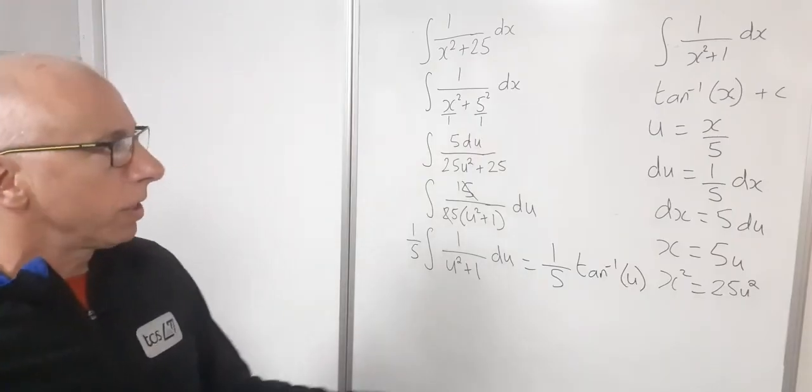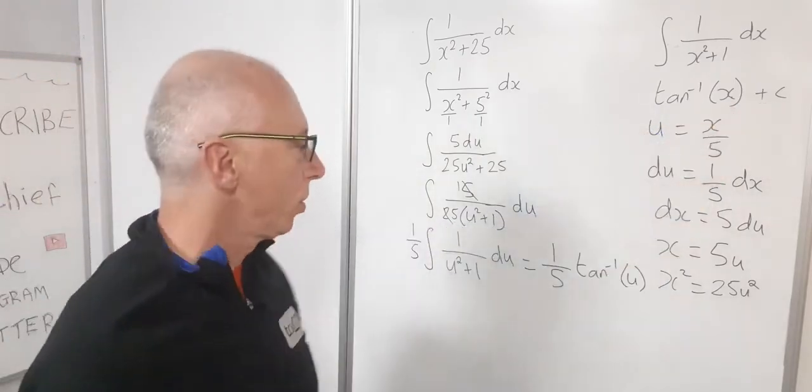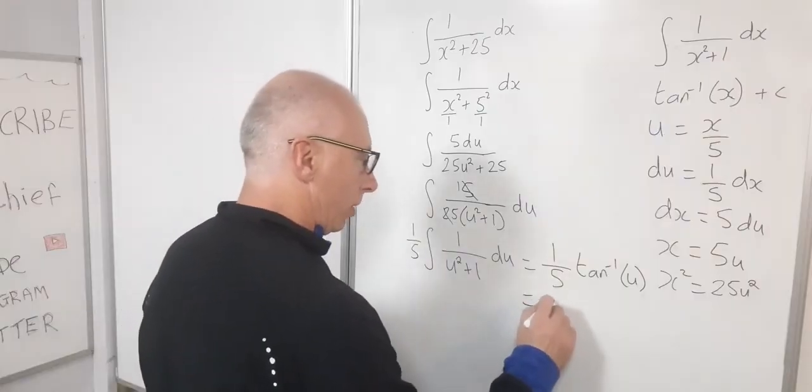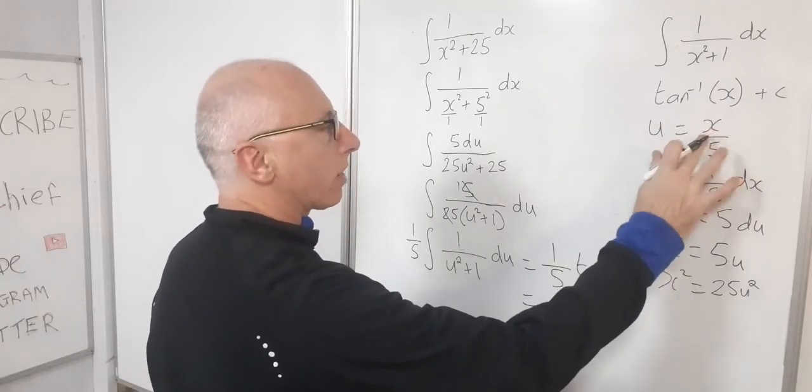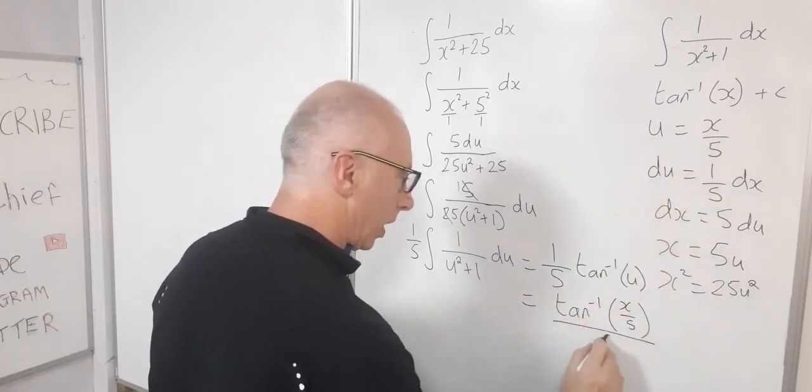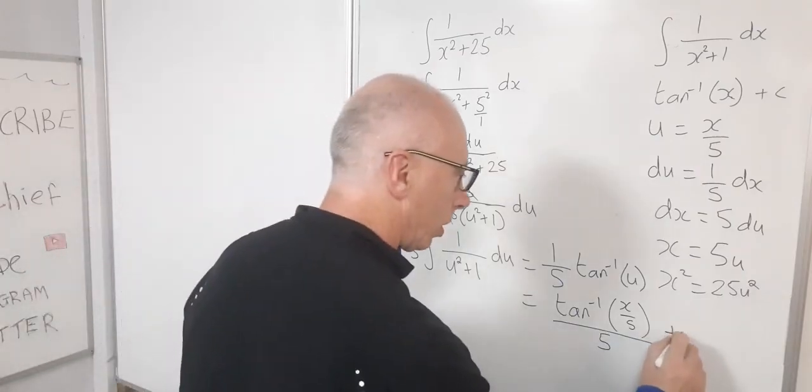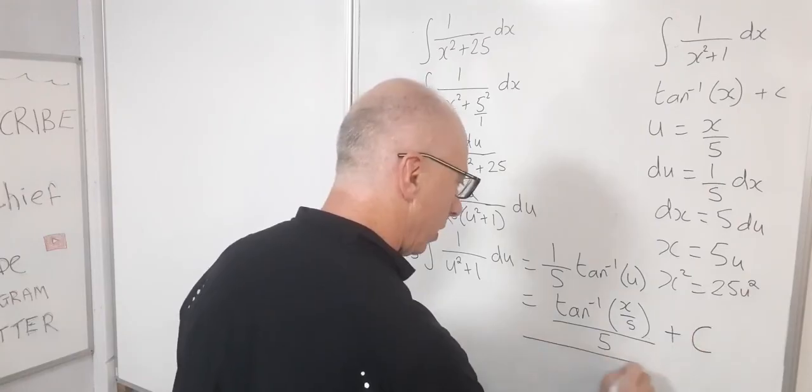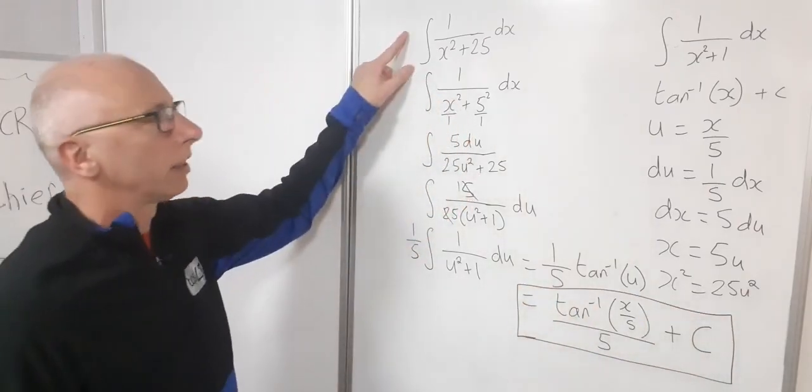But we're still not finished yet. We need to plug in our u in here. And then let's not forget our plus c. So now we've got inverse tangent x over 5. And now the fifth I'll just stick in my denominator. And then the all important plus c. That takes care of that integral.